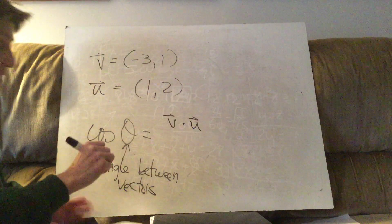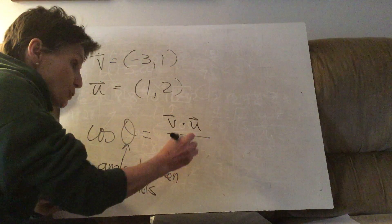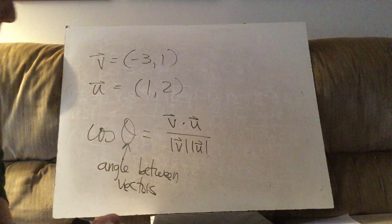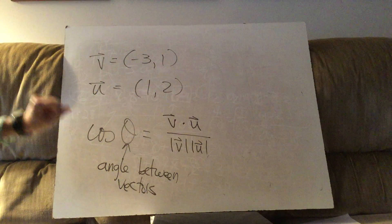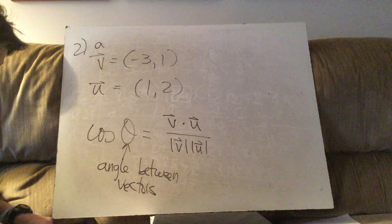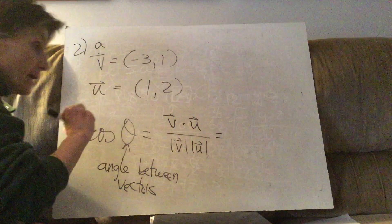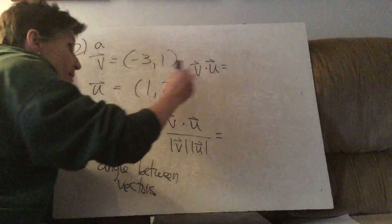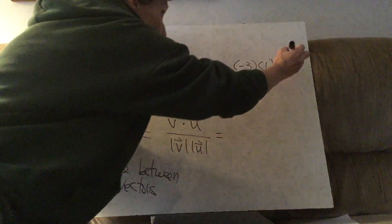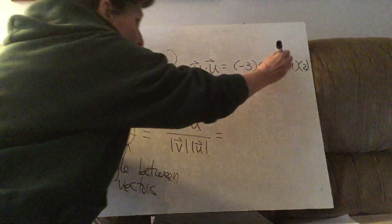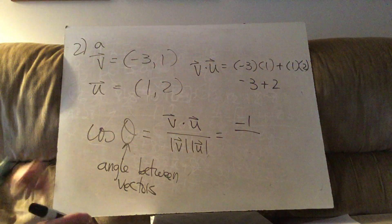We talked about the dot product last time. We divide it by the magnitude of each vector times each other. So to find the angle between these two vectors, we first need to find their dot product. The dot product is x times x plus y times y, so negative 3 plus 2 is negative 1. Our dot product is negative 1.